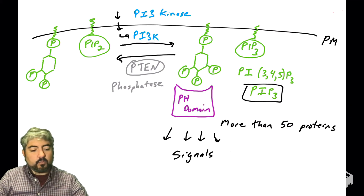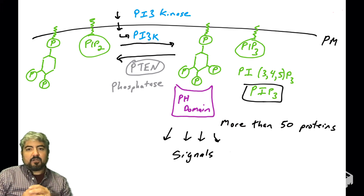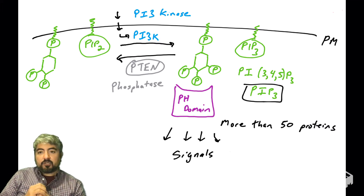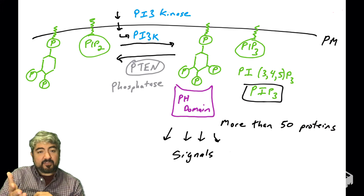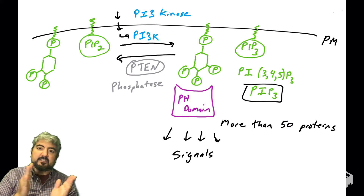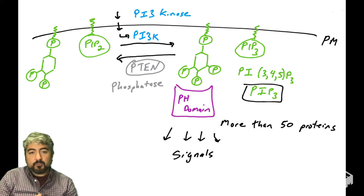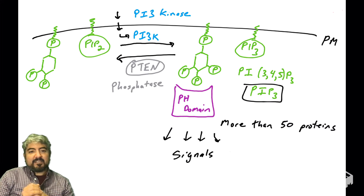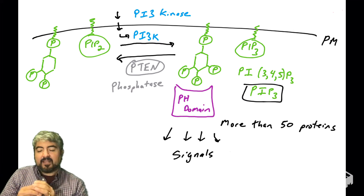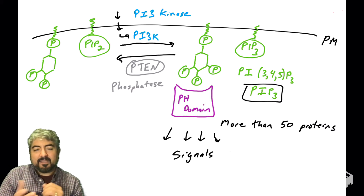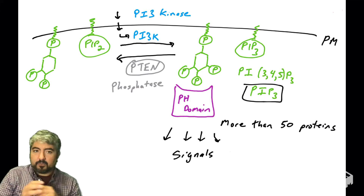In a previous video, we covered PIP2 and PIP3, which are lipid-modified sugars embedded in the plasma membrane. These are regulated by kinases like PI3K and PTEN, a phosphatase. We talked about how PIP2 can be converted to PIP3 and back. Now we're going to talk about what PIP3 does — how it signals into the cell through AKT. PIP3 can bind a domain found in many proteins called a PH domain, which has high affinity for PIP3.